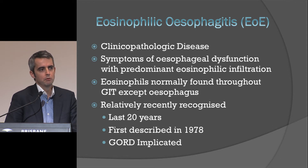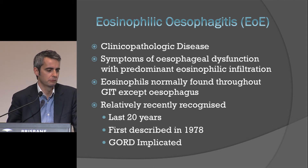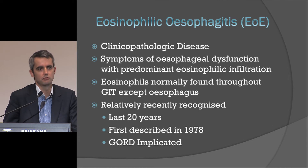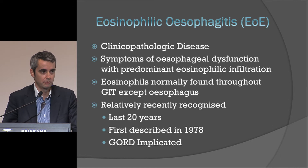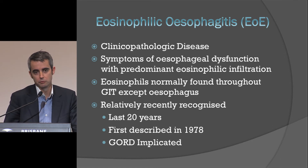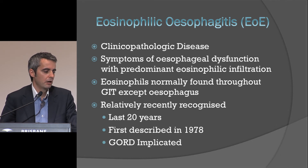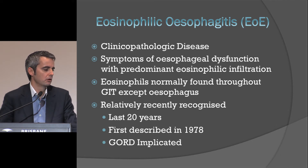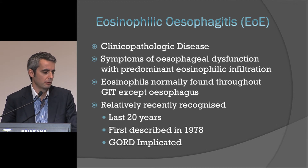It's important to recognise that eosinophils are commonly found throughout the gastrointestinal tract, but their presence in the esophagus is abnormal and indicates disease. In eosinophilic esophagitis, the eosinophilic infiltration is in isolation — so only occurring in the esophagus. Our understanding of this disorder is still evolving; it's only recently been recognised in the last 20 years or so, although it was first described in 1978.